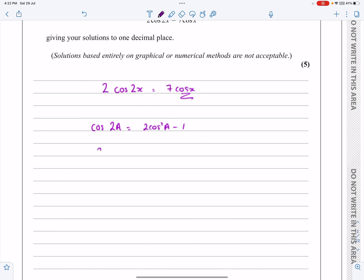And so our equation becomes 2 lots of 2 cos squared x minus 1 is equal to 7 cos x. And now when I multiply this all out, I'm going to get 4 cos squared x minus 2 equals 7 cos x.